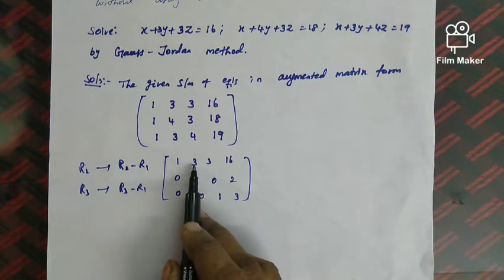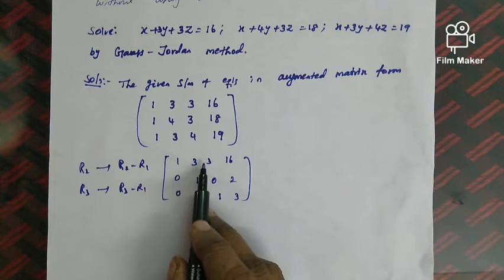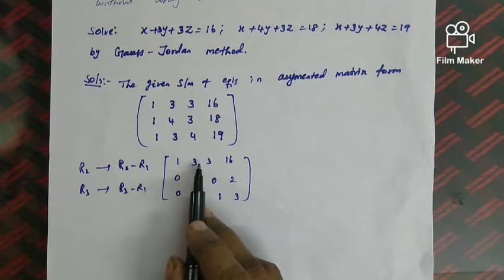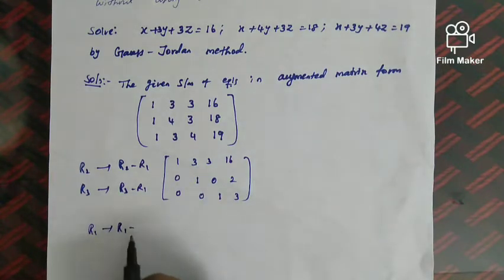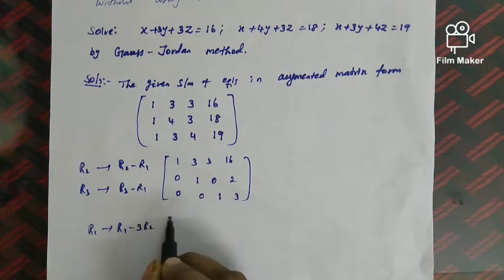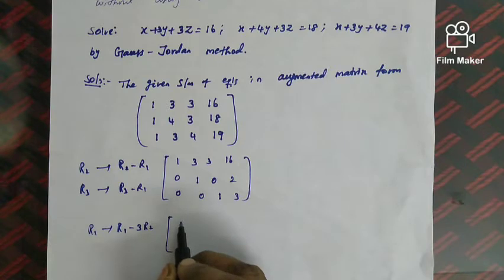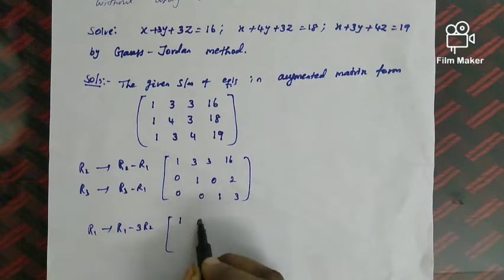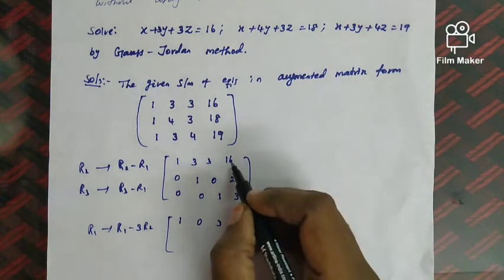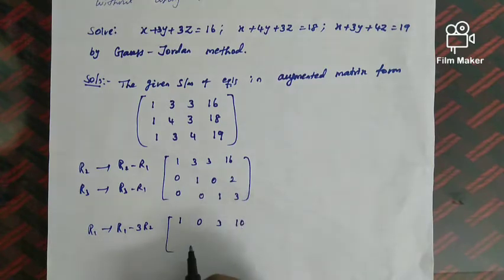To eliminate the off-diagonal elements in R1, we apply R1 = R1 − 3·R2. This gives: (1, 3−3, 3−0, 16−6) = (1, 0, 3, 10). The matrix becomes [1, 0, 3 | 10; 0, 1, 0 | 2; 0, 0, 1 | 3]. There is still a 3 remaining in the first row that must become 0.